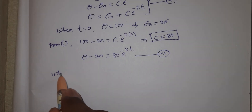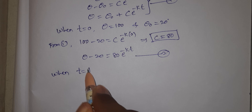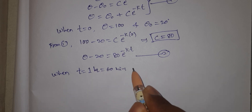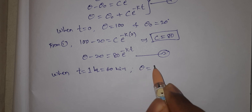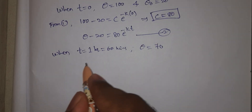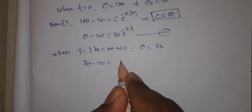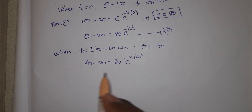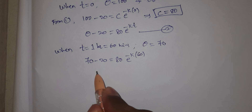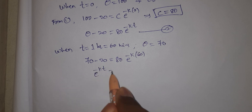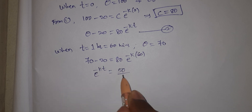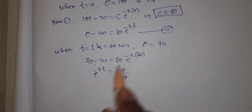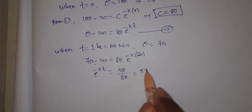Next, when t equal to 1 hour, we convert to 60 minutes, and θ equal to 70. Substituting into equation 2: 70 minus 20 equals 80 into e^(minus k into 60). So e^(minus 60k) equals 50 by 80, which equals 5 by 8.